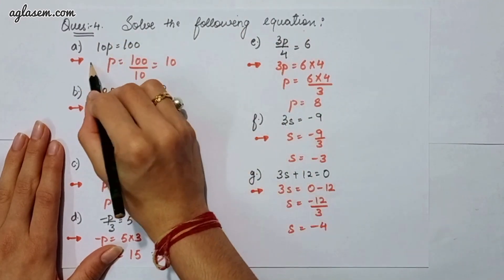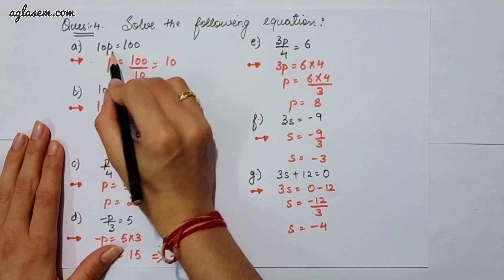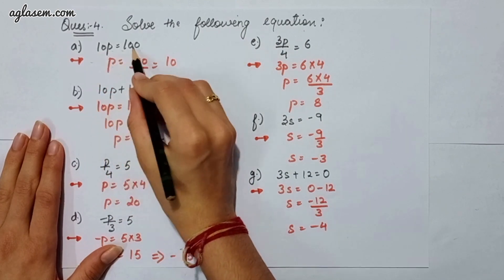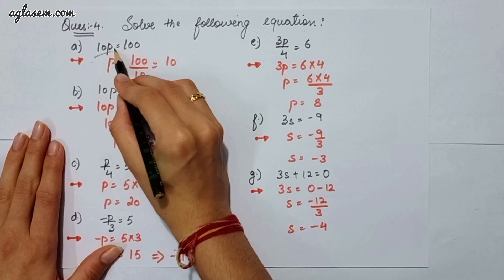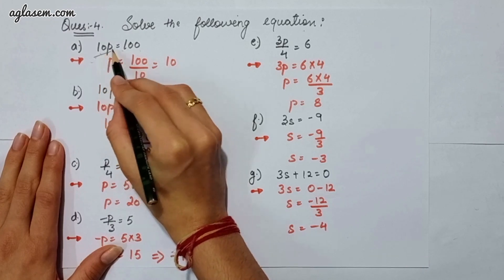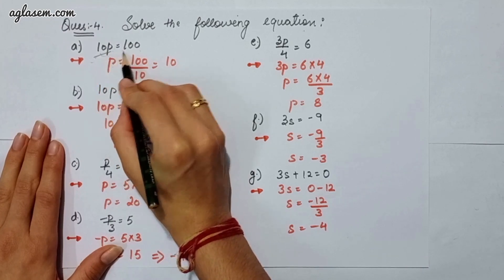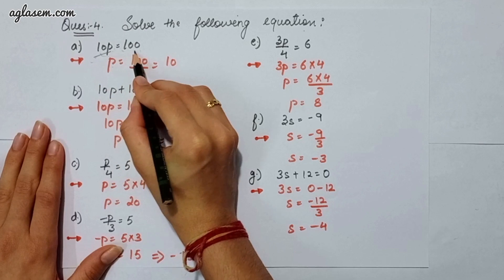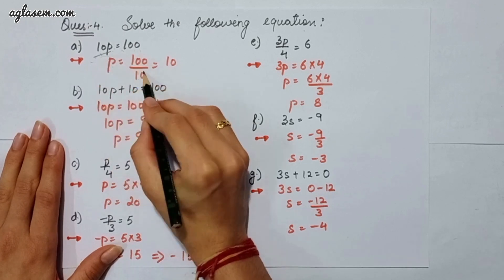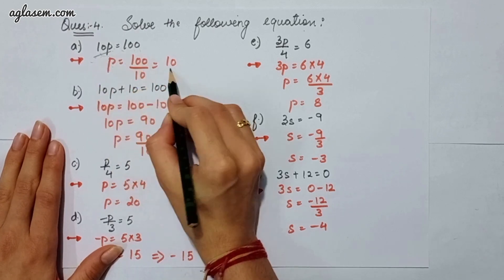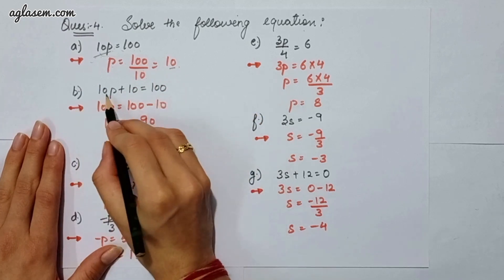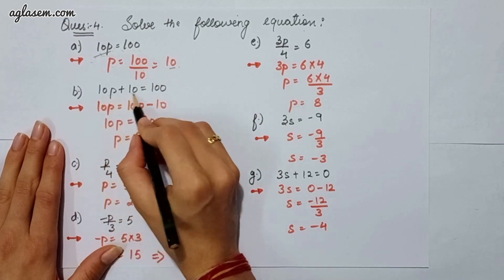So p is equal to 100 upon 10, which gives you 10. The b part says 10p plus 10 is equal to 100. Here plus 10 moves to the other side as minus 10, so 100 minus 10 gives 90.